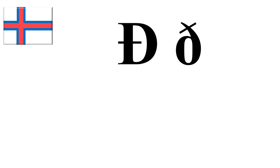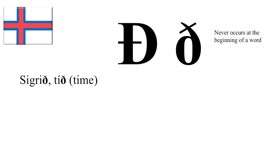Then we have the letter Ð, which, by the way, never occurs at the beginning of a word. But this letter Ð has many different sounds. So first of all, it can have no sound — it can be silent, as in the name SIGRI. And the Ð in TOY is just silent.